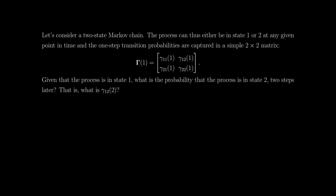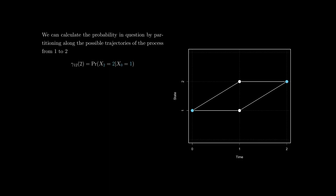I give you the two-by-two matrix, and then I'm going to ask you questions about the process. Consider the following: given that the process is in state one, what is the probability that the process is in state two two steps later? So I give you a one-step transition probability matrix, and I'm asking you something about two steps. We can do this calculation by applying the law of total probability to the two-step transition probability. Transitioning from state one, the process can potentially take two paths to state two — one through state one, or another through state two.